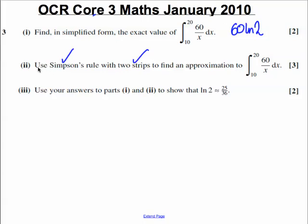The question says to use Simpson's rule with two strips to find an approximation to the integral between 20 and 10 of 60 over x dx. Do notice, we've already integrated this and worked out the exact answer in part i. Now we're using Simpson's rule with only two strips to approximate this integral.